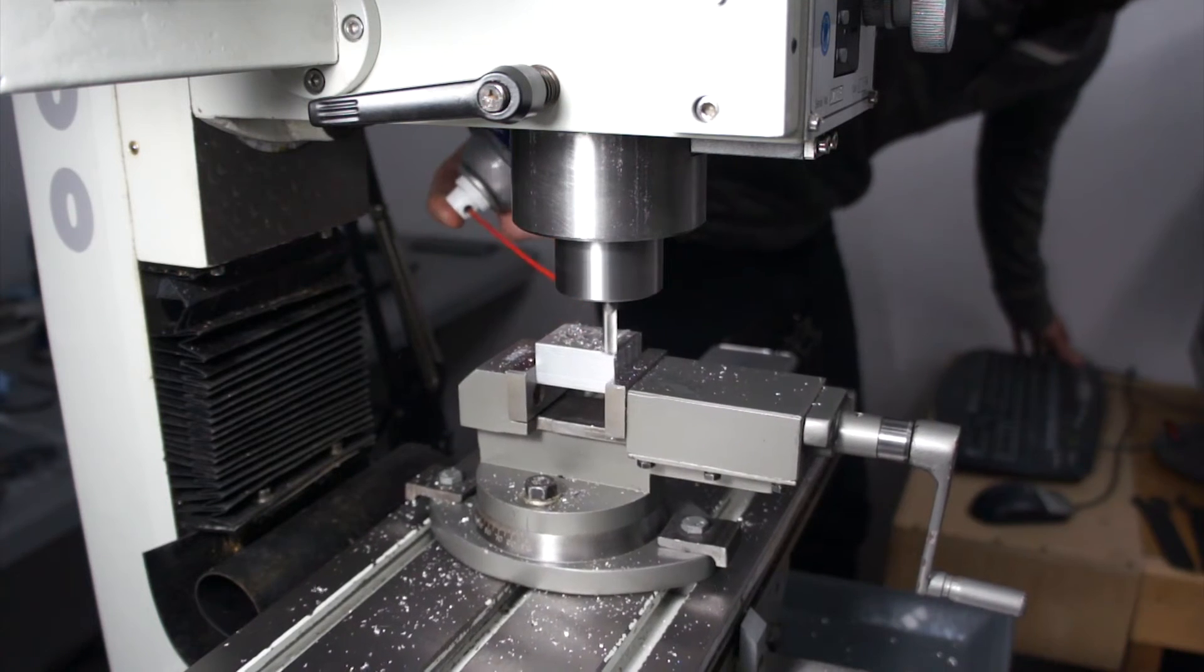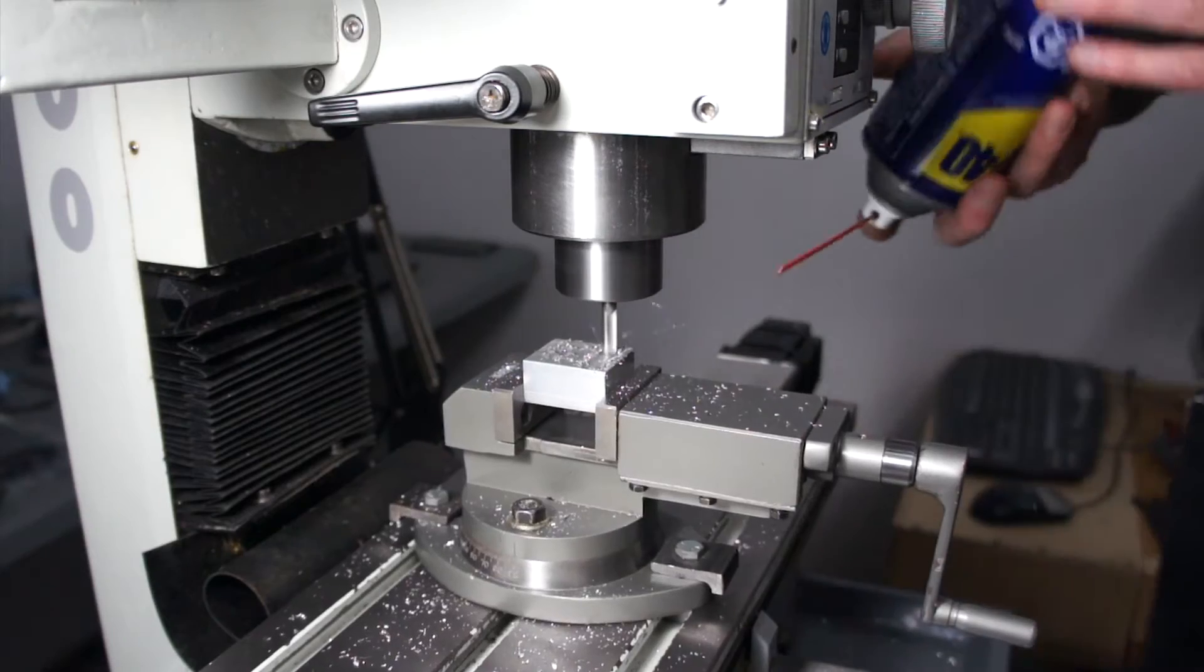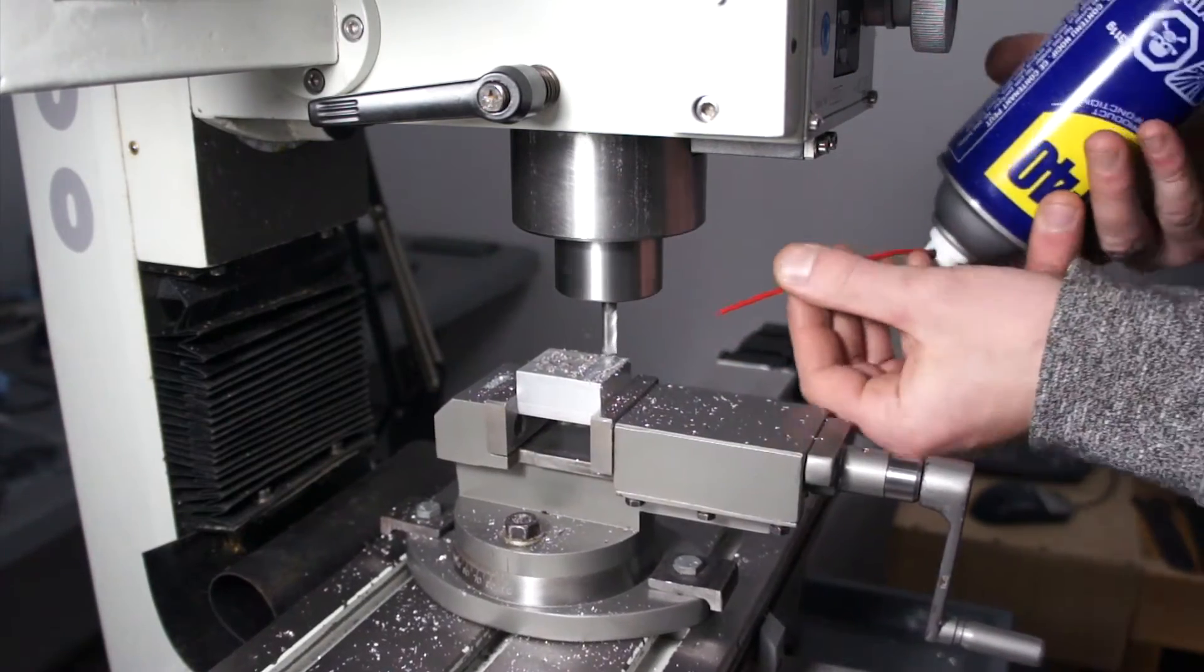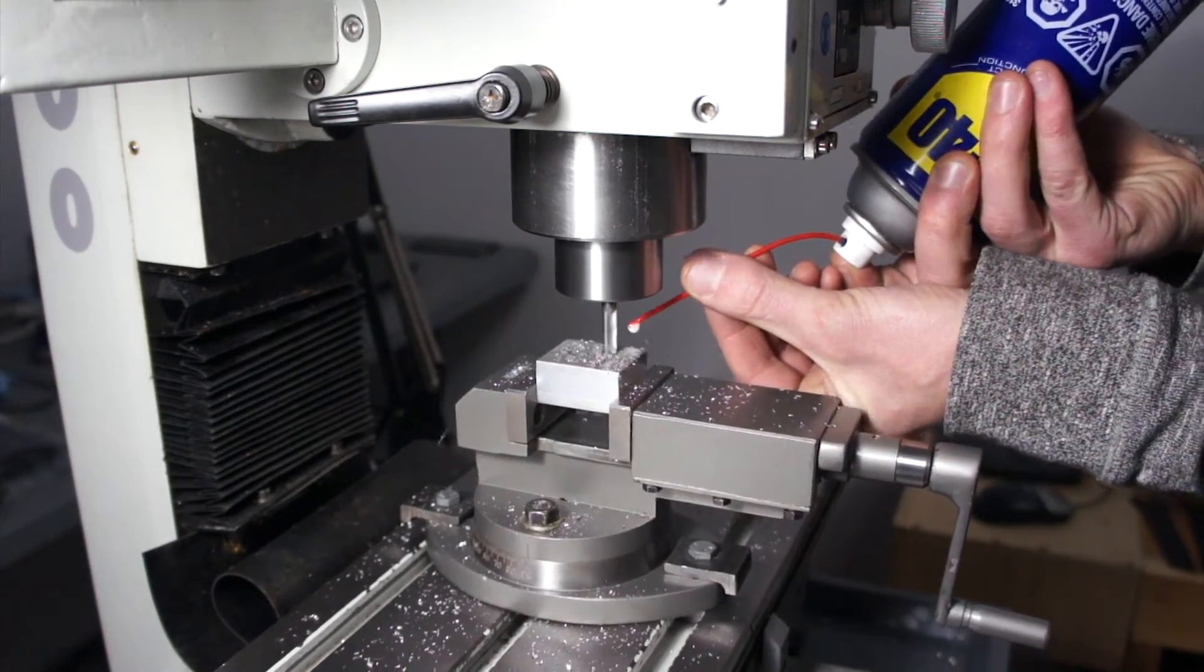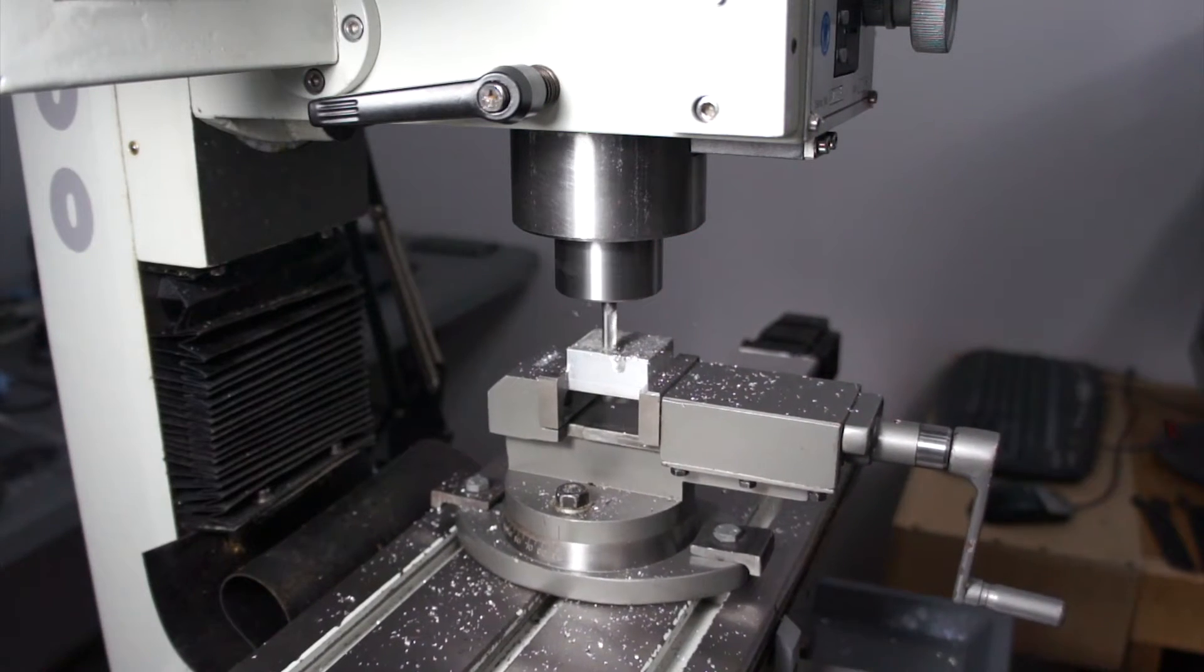I could have swapped in a brand new end mill, but once again, I'm testing. I kind of assumed at some point in this whole process I would crash the mill and snap the end mill, and I just didn't want to break a brand new one. So I'm just trying to kind of cobble through with a dull one.